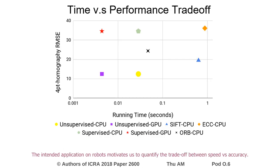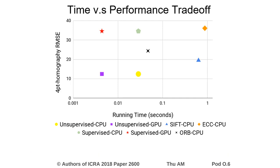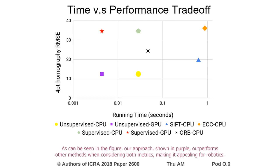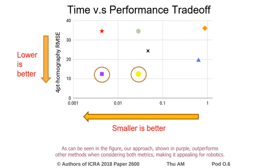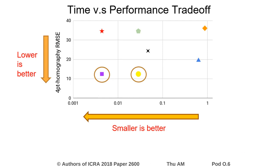The intended application on robots motivates us to quantify the trade-off between speed versus accuracy. As can be seen in the figure, our approach, shown in purple, outperforms other methods when considering both metrics, making it appealing for robotics.